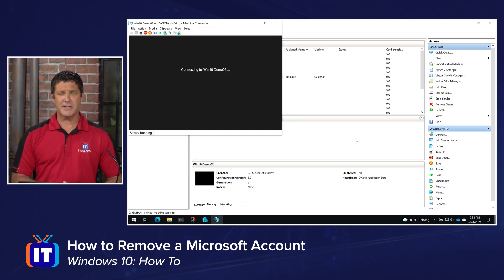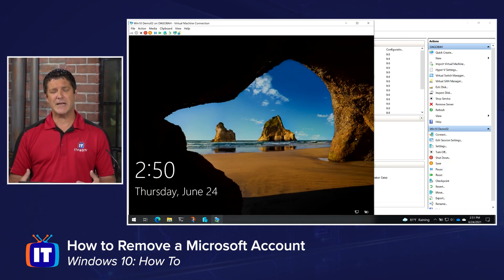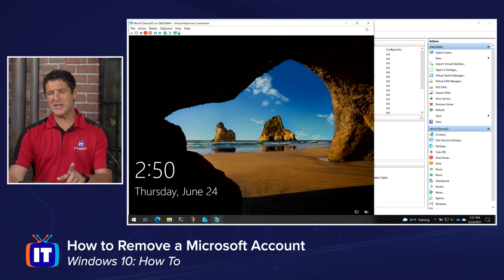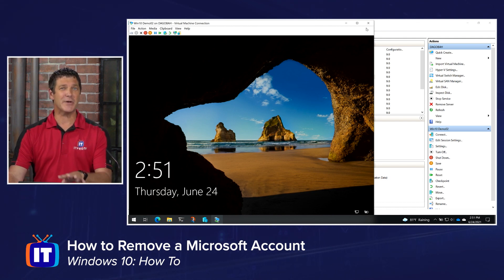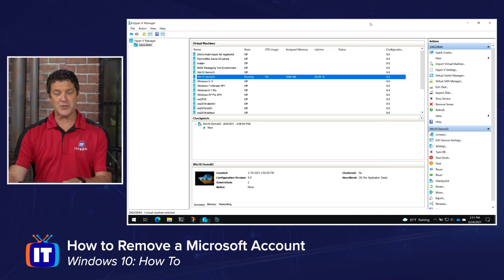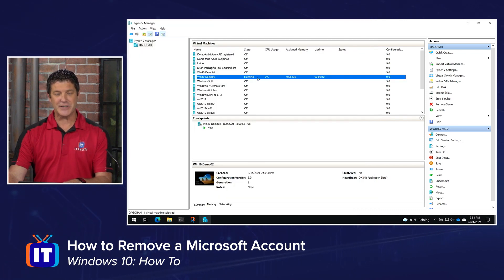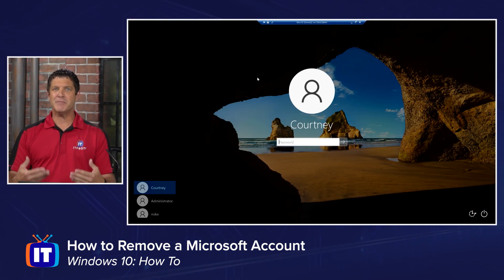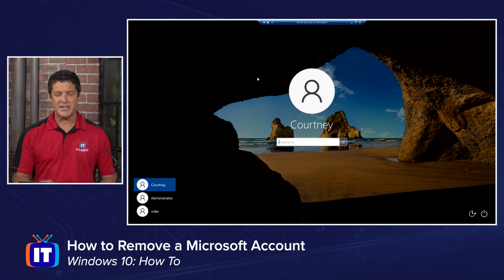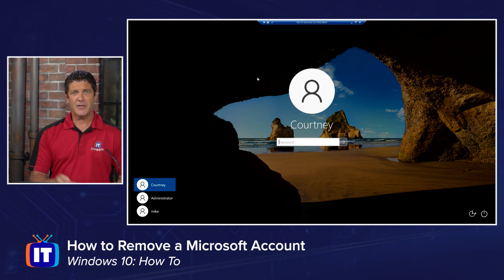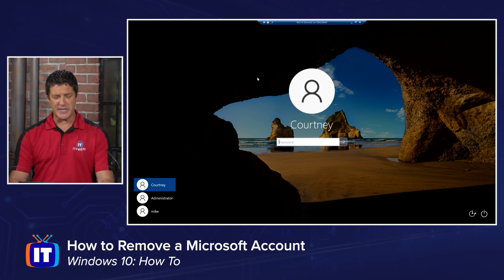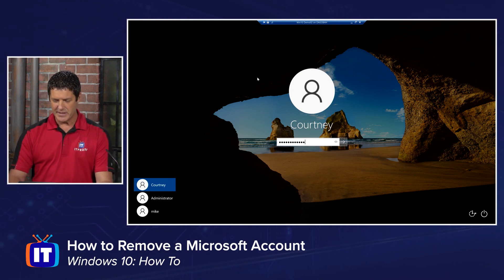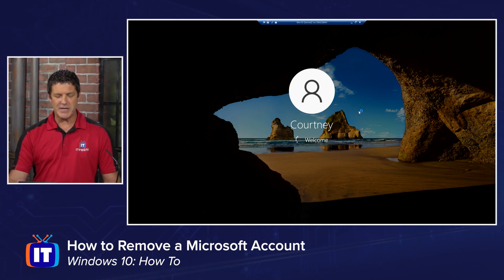I'll click 'Sign out and finish' and it's going to log me out and reboot my PC, then ask me to log back in. Now I'm going to do something that you won't have to do, because I'm doing this demo in a virtual machine — I have to close this window and reconnect. On your PC it's just going to bring you back to the logon screen. And look — there's the name I input for that new user account. I simply type in the password and I should be able to log in.